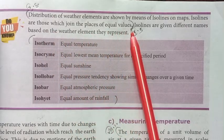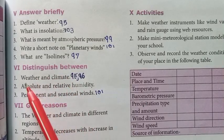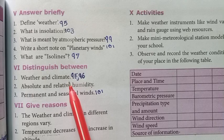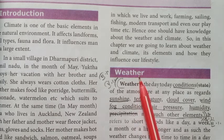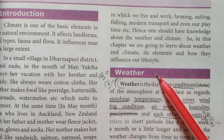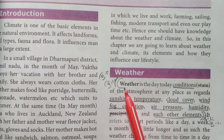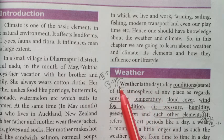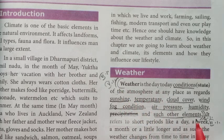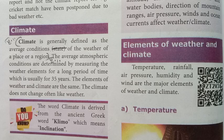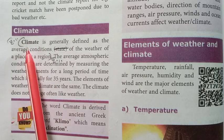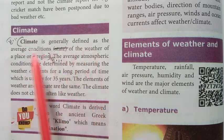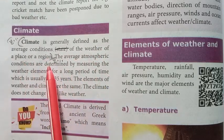Distinguish between weather and climate. Answer from page number 95. Weather: Weather is the day-to-day conditions of the atmosphere at any place, including elements such as sunshine, temperature, and other elements. Climate: Climate is generally defined as the average conditions of the weather of a place or a region.